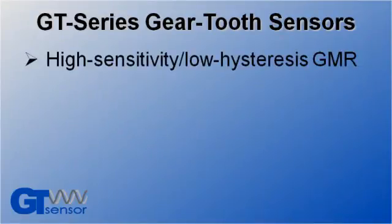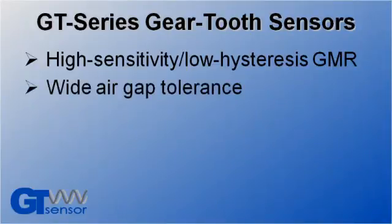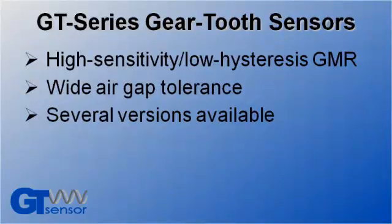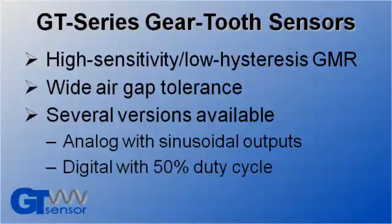These sensors use high sensitivity low hysteresis GMR for a wide air gap tolerance. Different versions are available to detect any size gear teeth. Analog versions provide sinusoidal outputs. Digital versions have a 50% duty cycle modulated current.